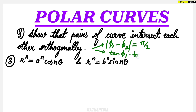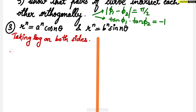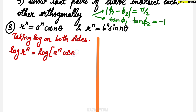The second method is to find the reciprocal of cot — that is, tan φ₁ into tan φ₂. If we get the value as minus 1, then we can say that both the curves are intersecting orthogonally. Let us go with the first method. The procedure: we have to take the log on both sides. So log of r^n equals log of a^n cos(nθ).